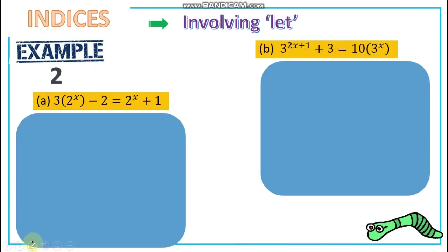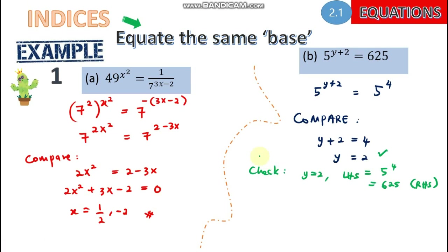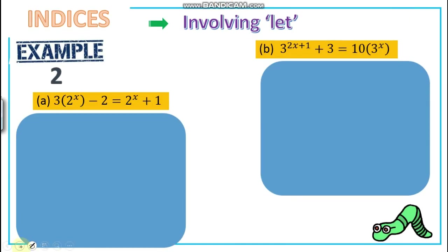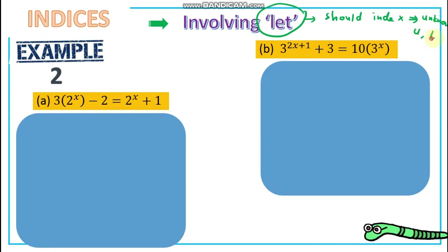We've just seen how to solve by equating the same base. But sometimes we have problems that require the 'let' method, where you let the index expression equal an unknown variable — such as u or t.